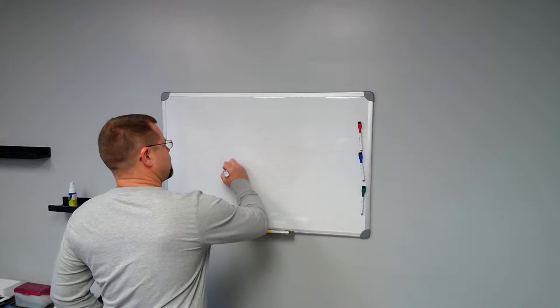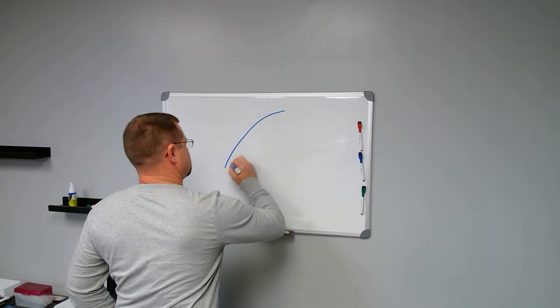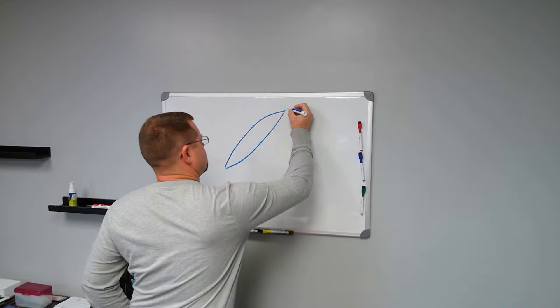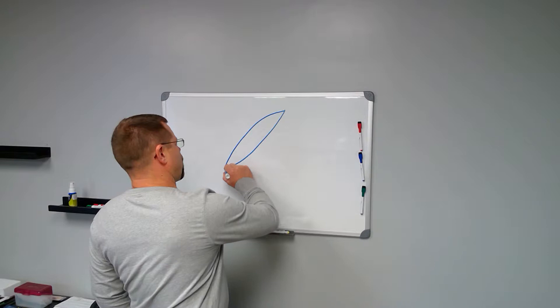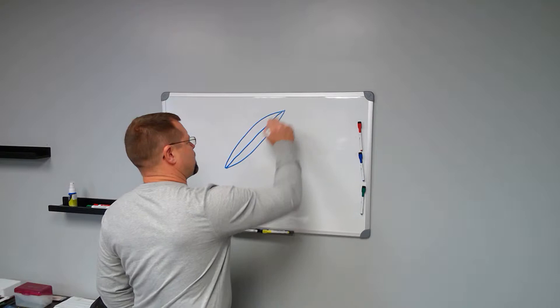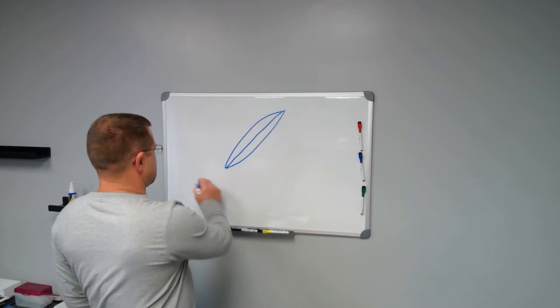So first I will draw a rotor blade. This is a symmetrical rotor blade because the upper camber and the lower camber are the same shape. The cord line is an imaginary line straight through the center of the rotor blade.